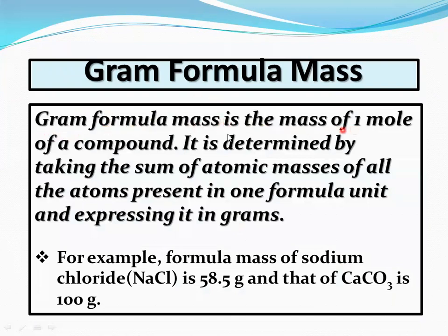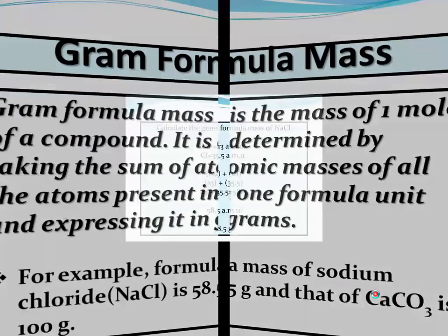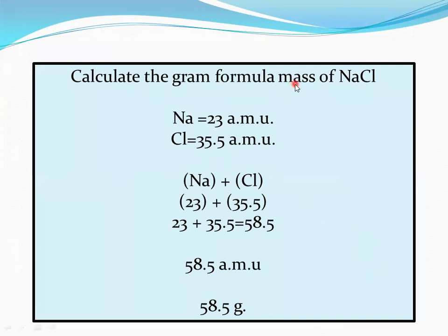Gram formula mass is the mass of one mole of a compound. It is determined by taking the sum of atomic masses of all the atoms present in one formula unit and expressing it in grams. For example, gram formula mass of sodium chloride is 58.5 grams and calcium carbonate is 100 grams. To calculate: first determine the formula mass, then replace AMU with grams. So gram formula mass of NaCl is 58.5 grams.